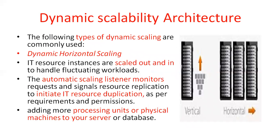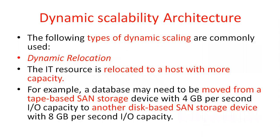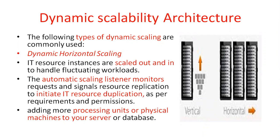There are different types of dynamic scaling available. The types are: dynamic horizontal scaling, dynamic vertical scaling, and dynamic relocation. Coming to dynamic horizontal scaling — the diagram on the right side shows that horizontal scaling means there is a need for more servers. You increase servers horizontally by adding more processing units or physical machines to serve databases.